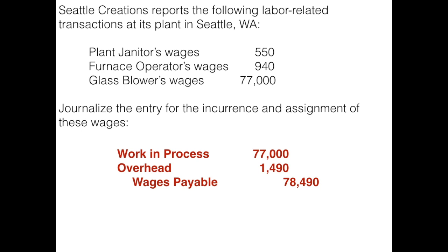In this next problem we're going to look specifically at our overhead T-account and determine what our balance is in overhead prior to application of overhead to production. Here we have Evergreen Furniture, which manufactures wood patio furniture. The company reports the following costs for June: wood, nails/glue/stain, depreciation on saws, indirect manufacturing labor, depreciation on the delivery truck, and assembly line workers wages.